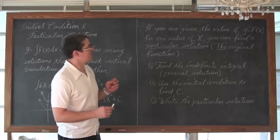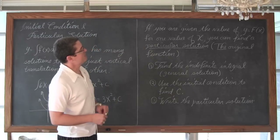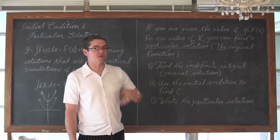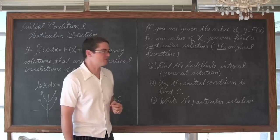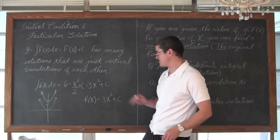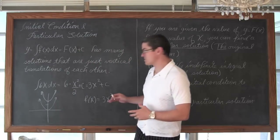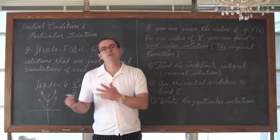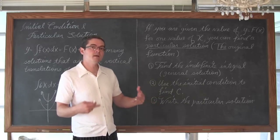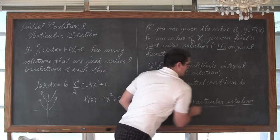Now if we are given just a little bit of information beyond the derivative that we are finding the antiderivative of, we can actually find the original function. If you are given the value of y equals f of x for one value of x, you can find a particular solution — the one original function for the conditions given in your problem. What you are going to do is first find the indefinite integral, that general solution like f of x equals 3x squared plus C. You are going to use the initial condition to find C. The problem will say that the original function is equal to 10 when x equals 2 — something like that. We are going to plug those values in, find the value of C, and then with that one little point that the function actually passes through, find C and write our particular solution.